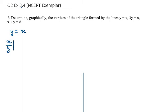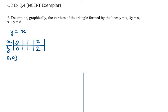For equation 1, y = x, we need to make a table. This is one of the easiest equations. If I take x as 0, y will be 0. If x is 1, y will be 1. If x is 2, y will be 2. So we get three coordinates: (0,0), (1,1), and (2,2).